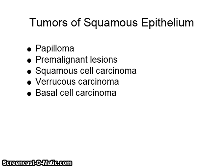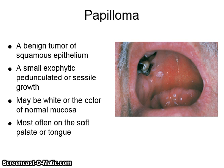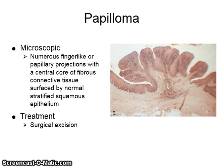Tumors of squamous epithelium include papilloma, premalignant lesions, squamous cell carcinoma, verrucous carcinoma, and basal cell carcinoma. A papilloma is a benign tumor of squamous epithelium. It is a small, exophytic, pedunculated or sessile growth. It may be white or the color of normal mucosa. It is most often found on the soft palate or the tongue. Microscopically, you see numerous finger-like or papillary projections with a central core of fibrous connective tissue surfaced by normal stratified squamous epithelium. The treatment is surgical excision.